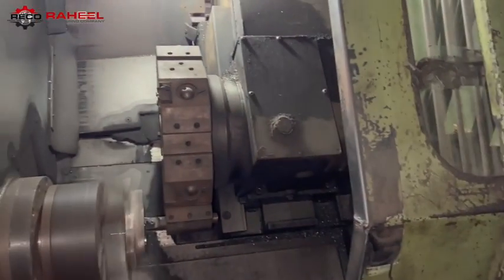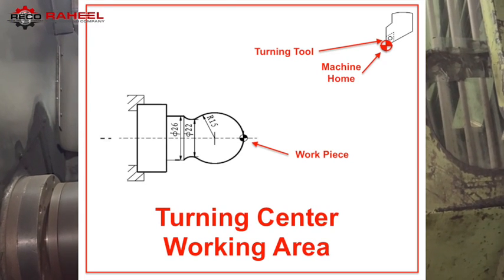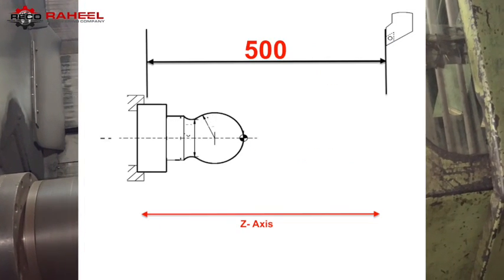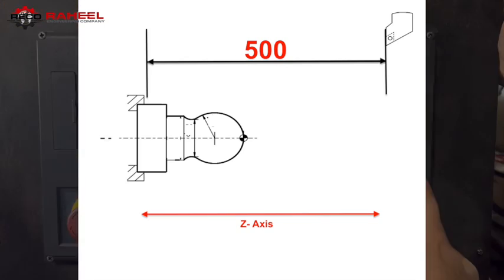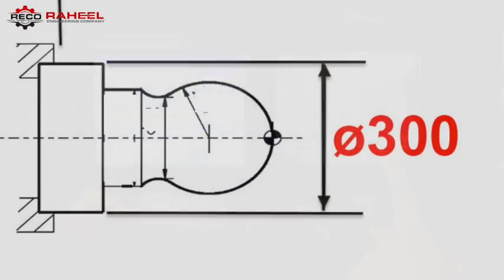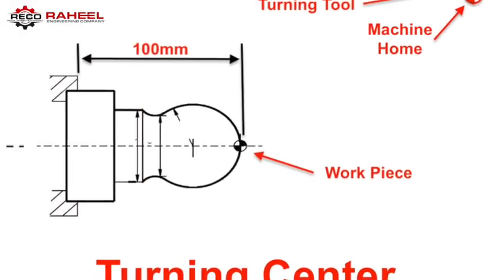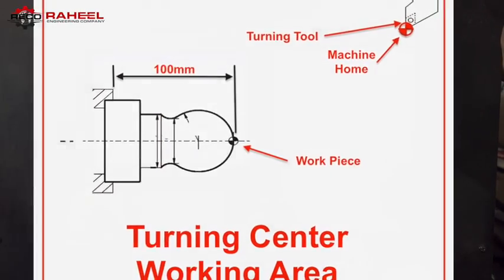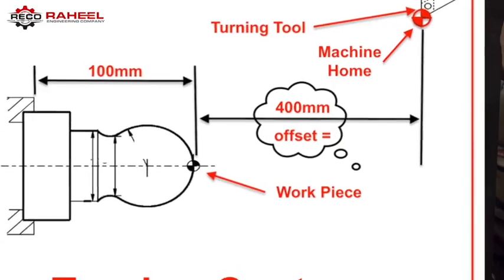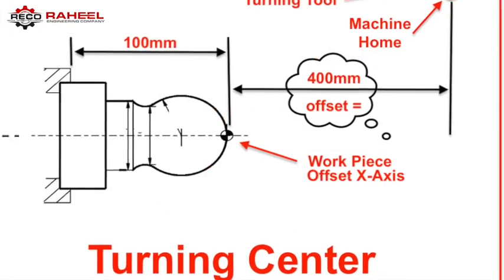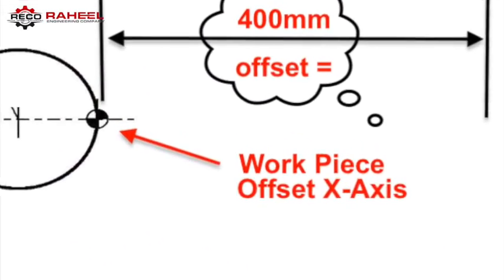If we have a turning center and its maximum working area in Z axis is 500 mm in length from the face of the chuck to its home point, and in X axis is 300 mm in diameter. If the workpiece length is 100 mm, then the offset value in Z axis will be 400 mm, and the center of the workpiece diameter is the offset value in X axis.